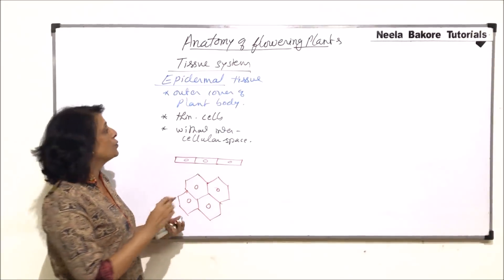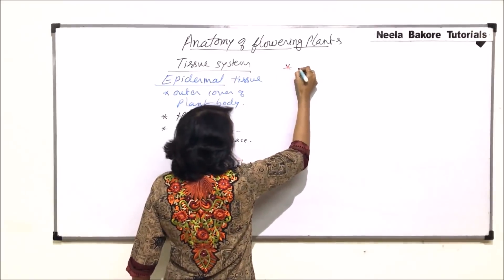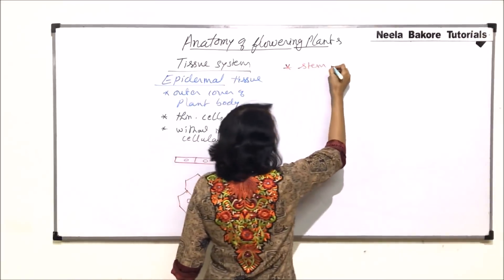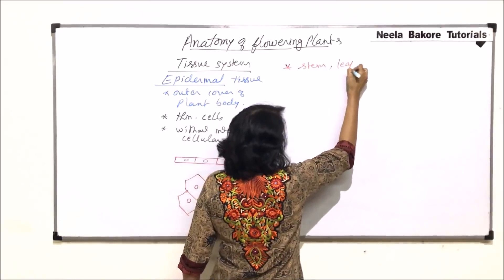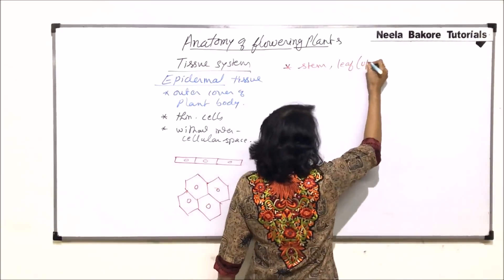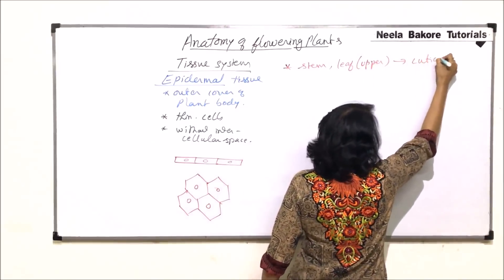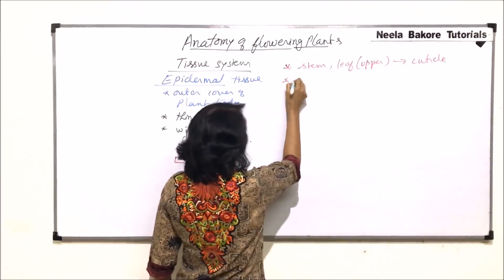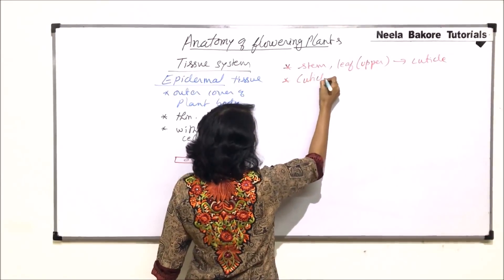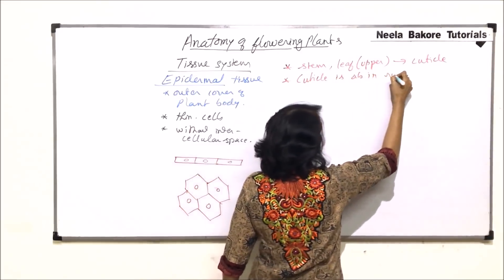The epidermal tissue on the stem and on the leaf — especially the upper surface of the leaf — is covered with cuticle. This cuticle is absent on root epidermis.